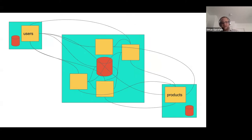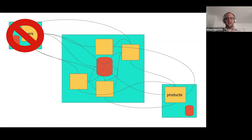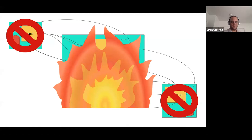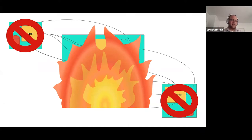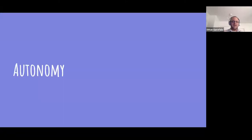Where it gets even more problematic: suppose the users so-called service is down, and a request comes in to change the price of a plasma screen to one cent — I probably want to verify who is trying to do that. If users is down, that means products is down, and essentially the whole system is down. You can put in countermeasures like short-circuiting, but at the end of the day I haven't separated anything really — all I've done is put it on a different server. So that begs the question: what defines a microservice?